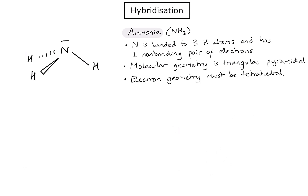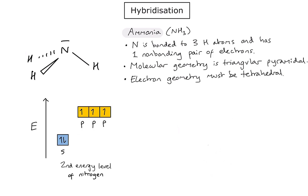So in order to consider the hybridisation here, let's consider first the orbital box diagram of nitrogen. I'm focusing only on the second energy level, so we're ignoring the 1s orbital. In the diagram here, you can see the 2s orbital and the 2p orbitals. The first thing to note is that because nitrogen is only bonded to three atoms, it looks as though we've got three nice half-filled orbitals which could be used to form those bonds.